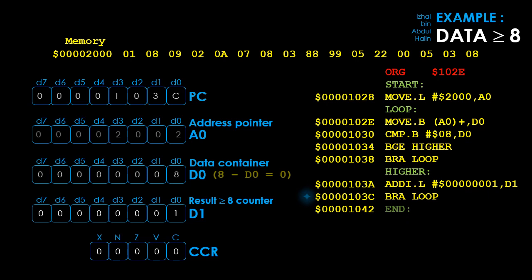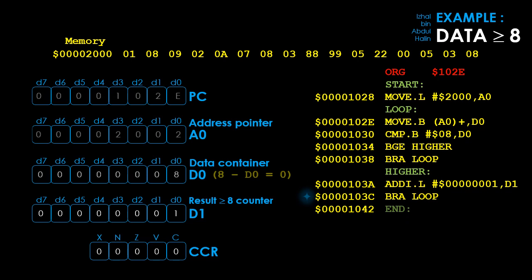Before executing BRA loop at address 103C, the program counter is updated to the next address 1042. Once this is done, the branch always instruction is executed, changing the program counter to point at loop's address 102E. We branch back to loop. I'll show you one more loop because I think you've got the idea by now.